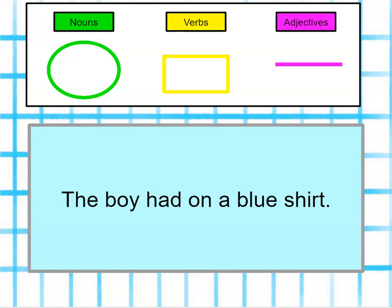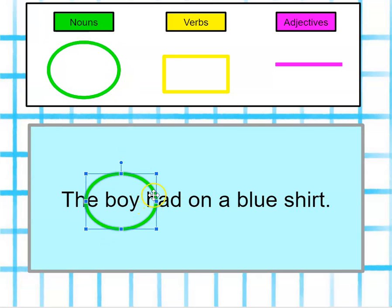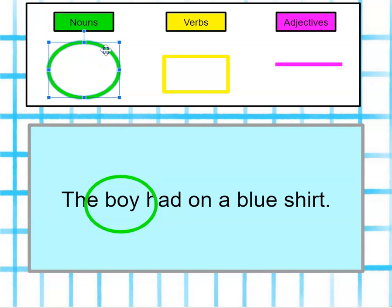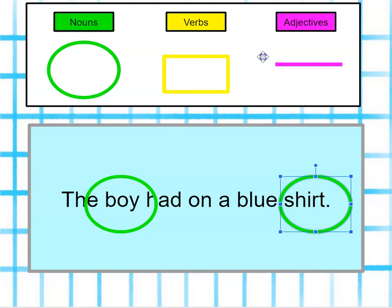Today during Zoom we practiced these as well. We read the sentence in the blue box, and then we indicated which word was a noun, which was a verb, and which was an adjective. The sentence says: the boy had on a blue shirt. Let's start with nouns — do we see a person, a place, or a thing in this sentence? I see the boy, which is a person, so I'm going to circle the boy. And I see the shirt, which is a thing. Now I'm going to look and see if there are any verbs in the sentence. The boy had on a blue shirt — I don't think there are any action words in this sentence, so I'm not going to move the yellow block over any of my words.